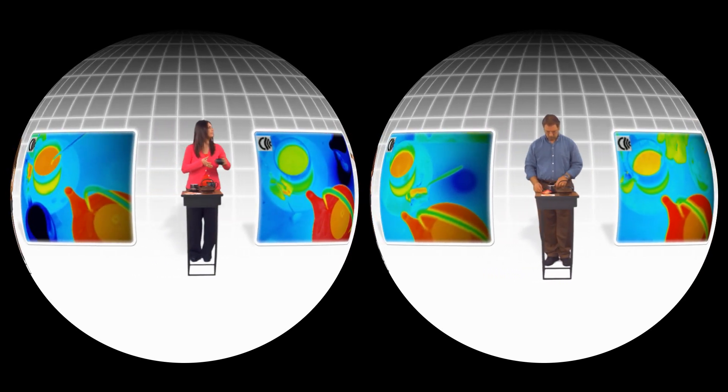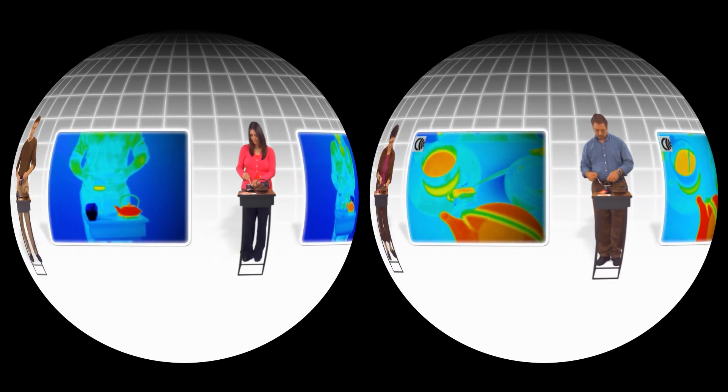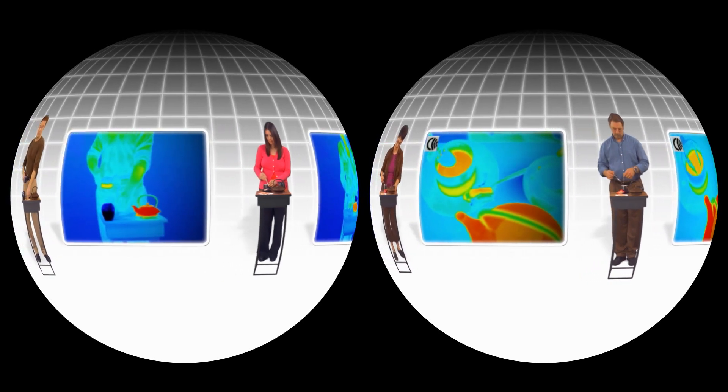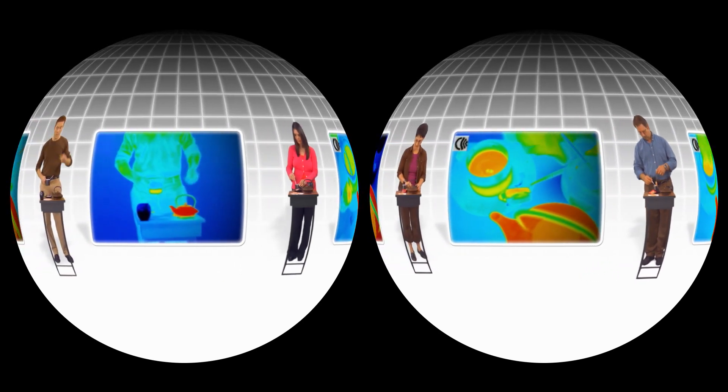Colors in these infrared images represent temperature: blue for cold, red for warm.